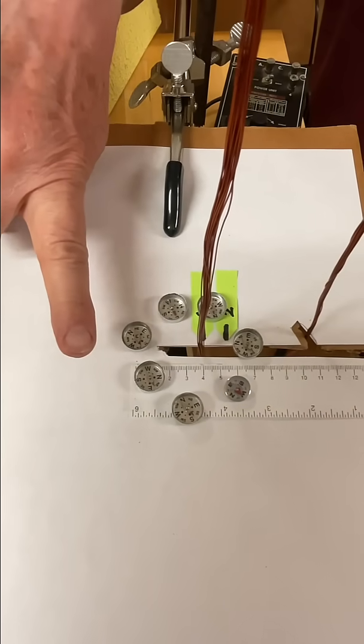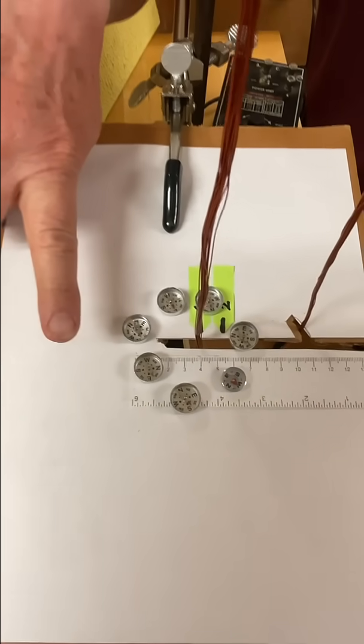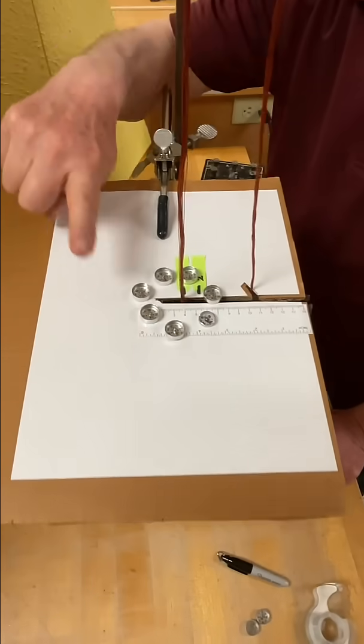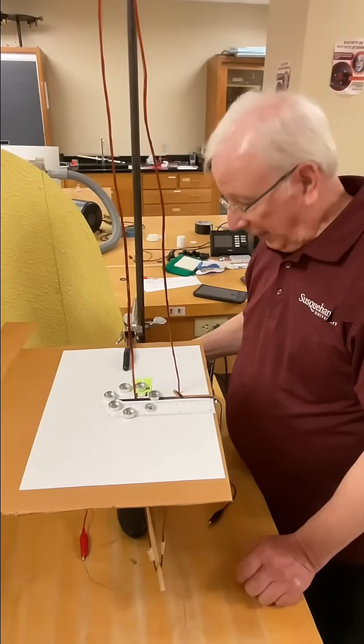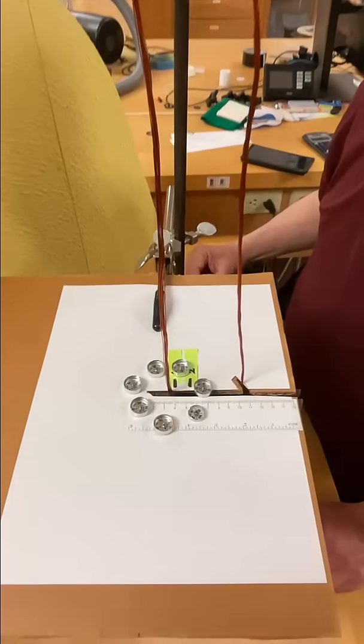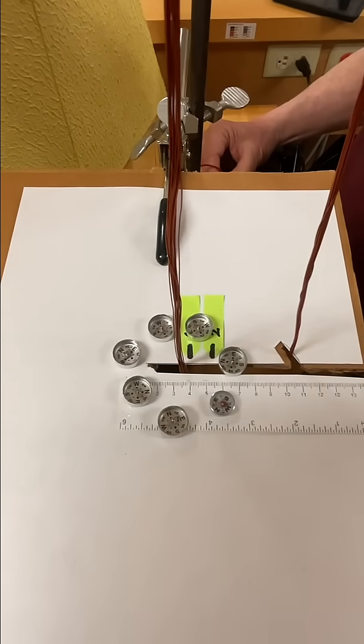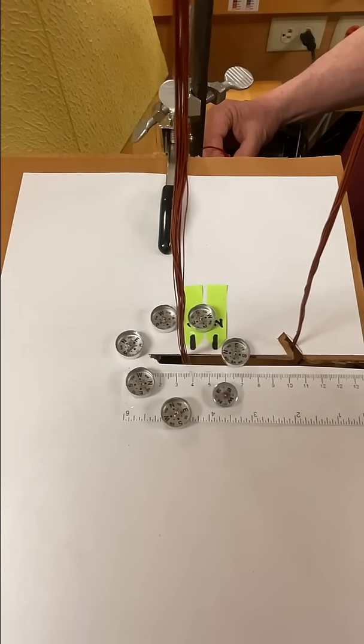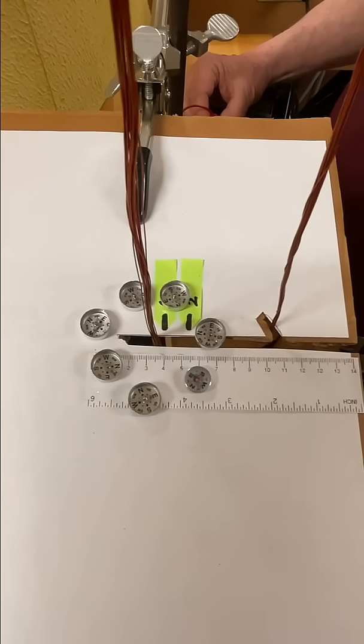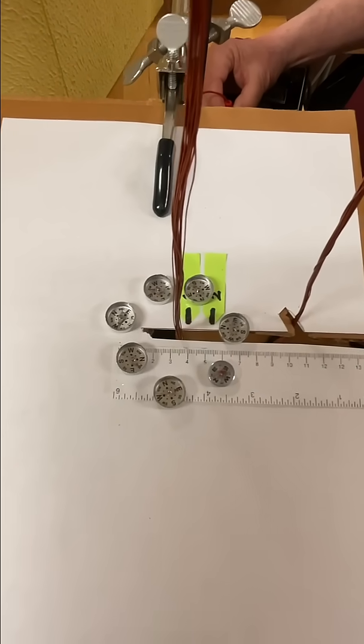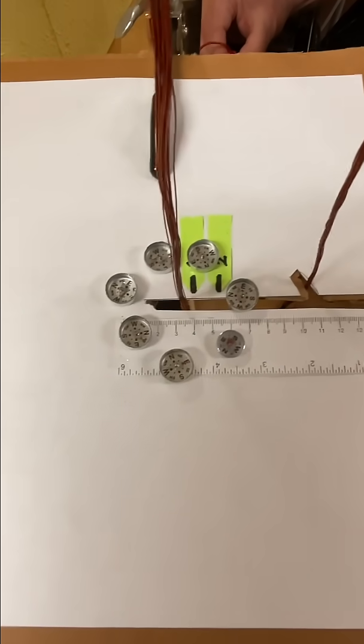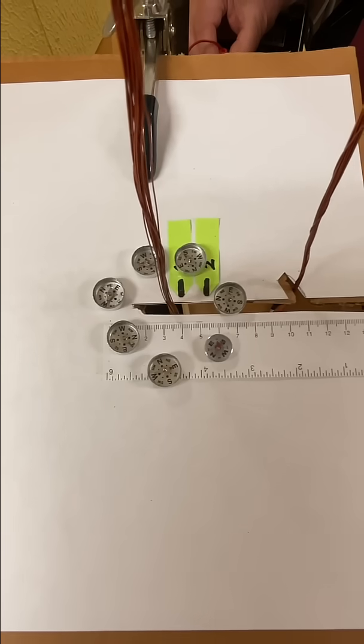Earth's magnetic field south. But now when I turn on the current, here we go! All the needles have changed and now they're mapping out the magnetic field produced by the wire because it's stronger. It's overwhelming the magnetic field of the Earth.